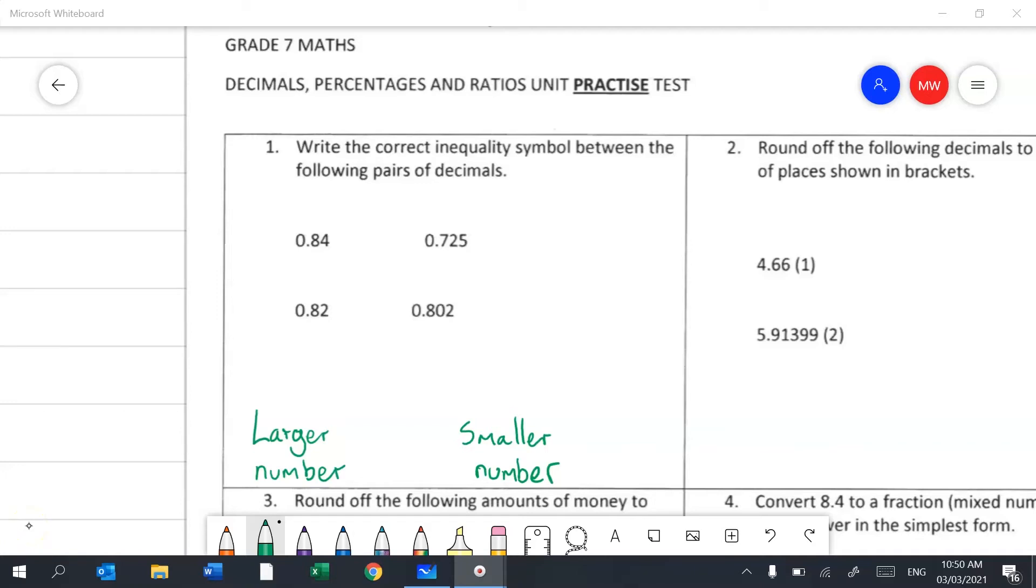Question 1 would like us to put inequality symbols in between numbers. So when you do inequality symbols it's one of those greater than or less than symbols and it matters which way you put it around. If you look down the bottom here I've written a larger number and a smaller number. We need to put a symbol in to show which one's larger and smaller and it goes this way like this. If you can't remember which way it goes, I often think about this as being a bit like Pac-Man and Pac-Man will always eat the larger number.